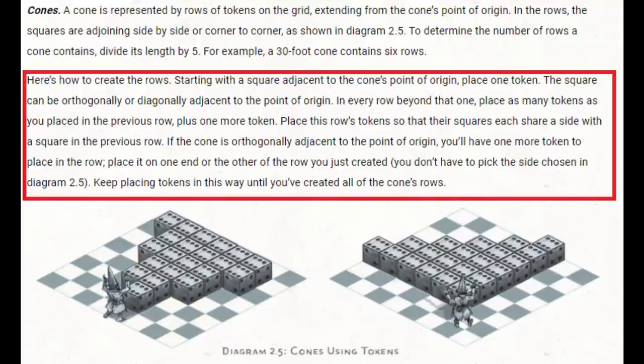So, it goes on to say, here's how to create the rows. Starting with a square adjacent to the cone's point of origin, place one token. The square can be orthogonally, which means at a right angle, I had to look that up, or diagonally adjacent to the point of origin. Now, remember, according to the player's handbook, we also have the option to include the square that is the point of origin if we want to. Otherwise, using the token method, exactly one square on any side or corner of the point of origin gets included in the area of effect. In every row beyond that one, place as many tokens as you placed in the previous row, plus one more token. Place this row's token so that their squares each share a side with a square in the previous row. So, what this does is, first, it approximates a triangle shape, roughly. But, secondly, it ensures that every row is exactly 5 feet wider than the previous row.